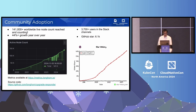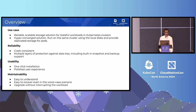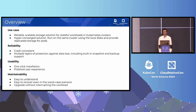Next, I want to quickly introduce Longhorn. For the use case, Longhorn is a reliable, scalable storage solution for Kubernetes stateful workloads. Basically, if you have a stateful workload — if you have a pod that needs a Kubernetes PV or PVC — then you can use Longhorn to dynamically provision and manage those PVs and PVCs.